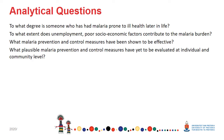Now that you have some information on describing the problem, you might want to dig a little bit deeper with analytical questions. You might want to know: to what degree is someone who has had malaria before prone to bad health later in life? To what extent does unemployment or other socioeconomic factors contribute to the malaria burden? Or are there any control or prevention measures that have been put in place — are they effective? And are there any new interventions that have been evaluated at individual, population, or community level?